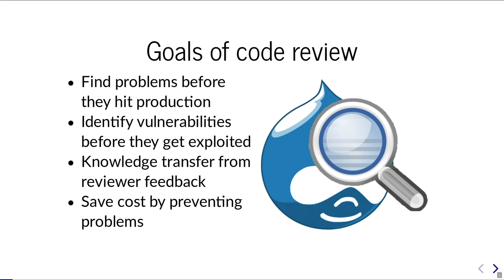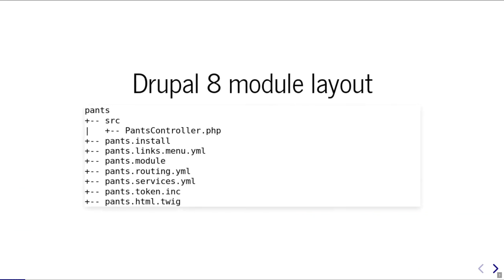I structured my talk by giving just a couple of examples. Let's look at the typical Drupal 8 module layout. In this example I use the name 'pants', so we have some kind of pants module. The typical files you see in this module are install files, module files, and a couple of YAML files in Drupal 8 that contain your configuration.